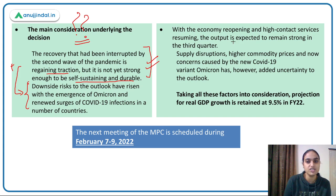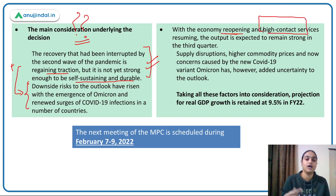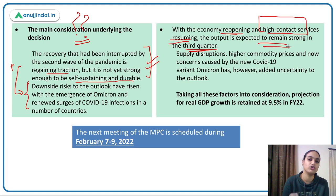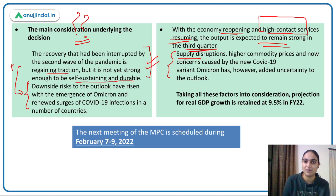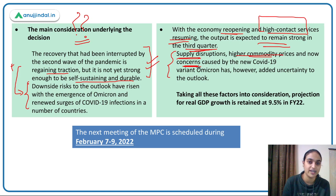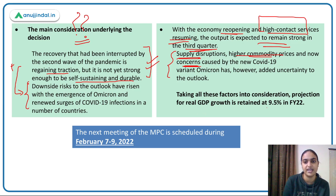The economy is reopening and high-contact services that were earlier shut down have started resuming. Good growth is expected in the third quarter. However, supply-side disruptions are already present, commodity prices are high, and the new variant poses additional concerns. Keeping these factors in mind, the projection for real GDP growth is retained at 9.5% for financial year 2022.